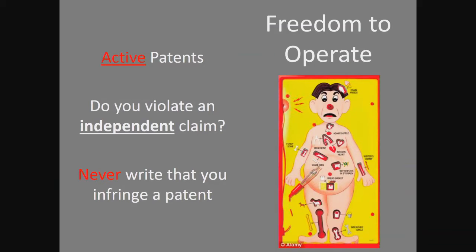The next one is freedom to operate — are you going to get sued? What you're looking at for that is active patents, because once a patent is expired, you're not going to get sued on that. You need to look at active patents and the independent claims in there. If you see a claim in a patent that you think is really close to what you're working on, never write that you infringe that claim. You can say something nebulous like, 'Hey attorney, I think this is a patent of interest — you take a look at it.' Only a judge or court can make that determination.